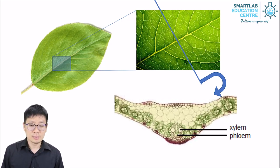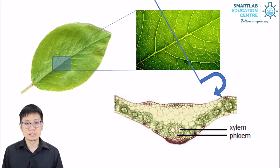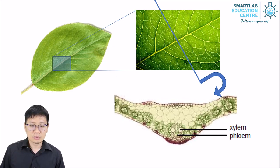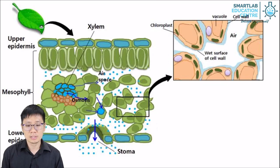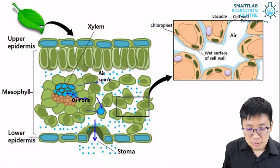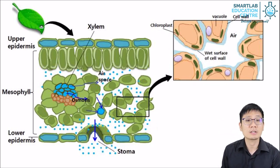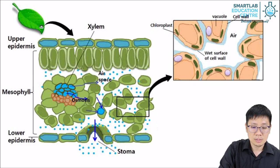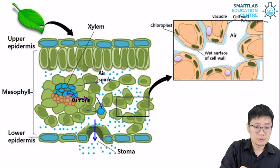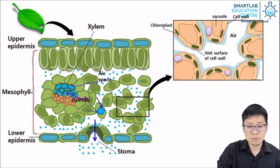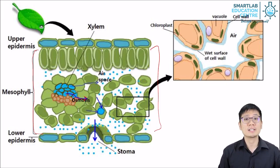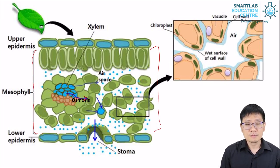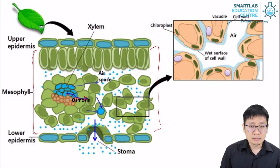For transpiration pull, we're going to start by looking at the leaf. The process is like a chain of events that begins with the leaf. Looking at this picture, we take a cross section and zoom into the leaf structure. This diagram shows how the cells are arranged and the processes that take place. We start with osmosis from the xylem to the surrounding mesophyll cells. Mesophyll cells are leaf cells, coming from the word 'meso' meaning middle.